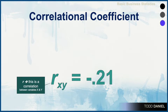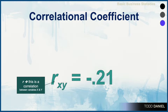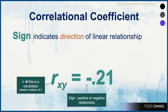Let's take a look at what a correlational coefficient looks like. It is represented by the letter r. R sub xy means that this is a correlation between variables x and y, and r stands for regression, not relationship. We also notice that there is a sign — either positive or negative — attached to our correlational coefficient. The sign indicates the direction of a linear relationship.